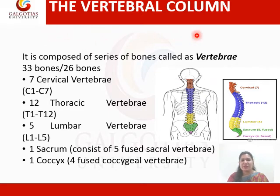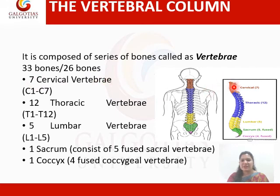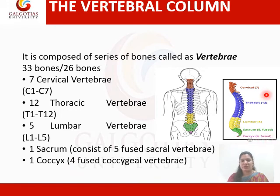The third part is the vertebral column. It comprises a series of bones called vertebrae. There are 33 bones in a newborn baby and 26 bones in an adult. Seven are cervical vertebrae — the uppermost seven bones. The next 12 bones are thoracic. Then five are lumbar. Then sacrum and coccyx. The sacrum consists of five fused sacral vertebrae. The coccyx is formed by four fused vertebrae. In children, the sacrum and coccyx are not yet fused, that is why it is 33 bones.